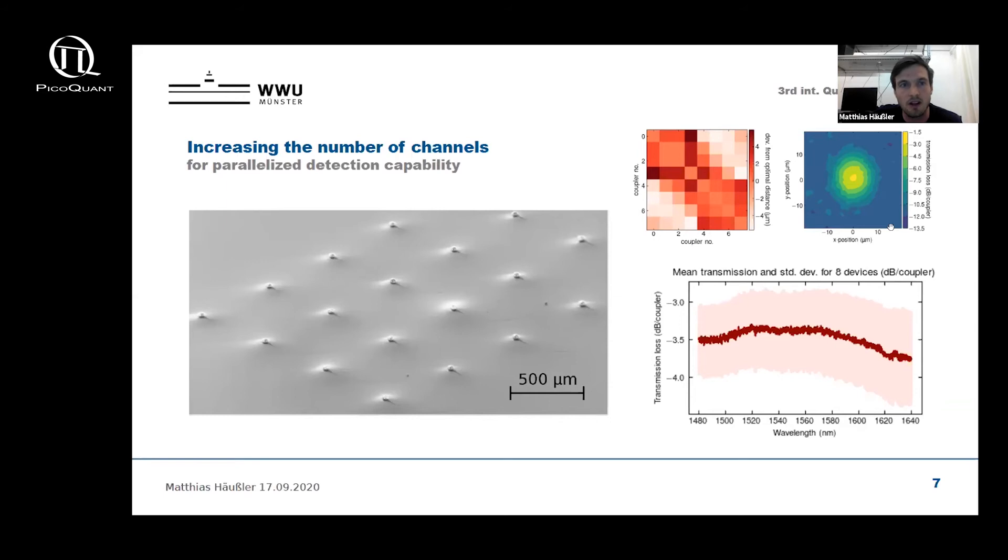On the top right you can see a matrix showing measured inter-coupler distances compared to the ideal inter-coupler distances, and we find a mean deviation here of two micrometers. Next to the matrix you can see the coupling efficiency versus the position of the fiber array to the coupler. A plus-minus five micrometer deviation from the optimal position comes with a minus 1.5 dB reduction in the coupling efficiency. So the two micrometer placement accuracy can be compensated to a certain amount by the alignment tolerance.